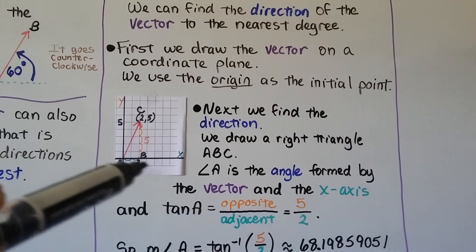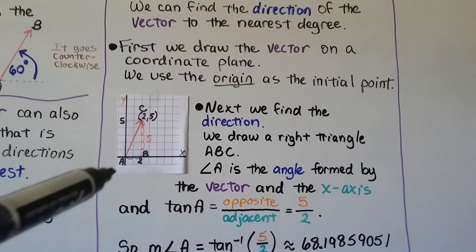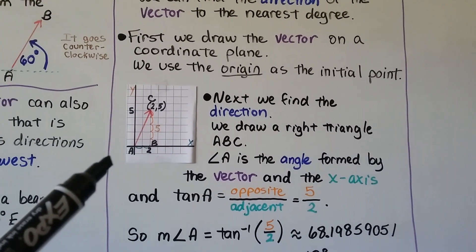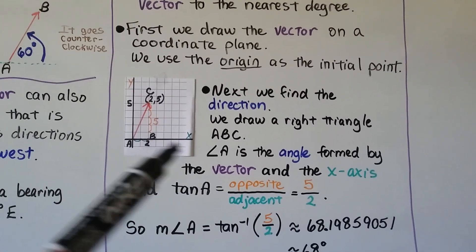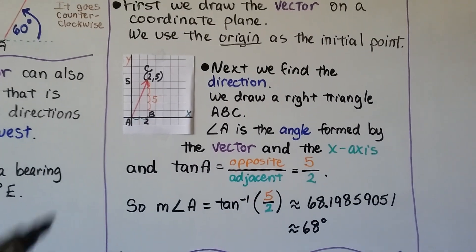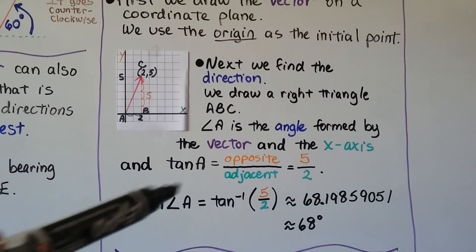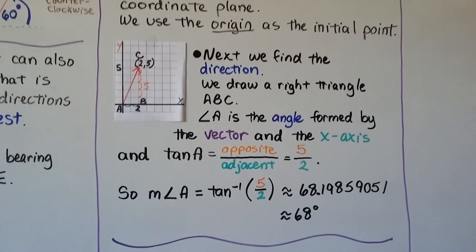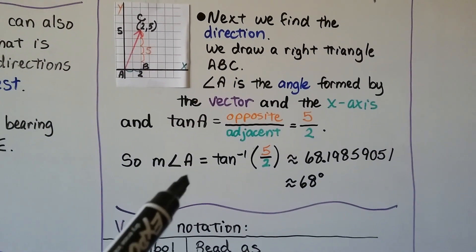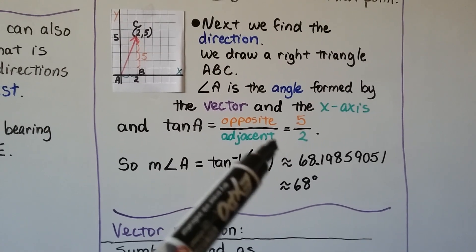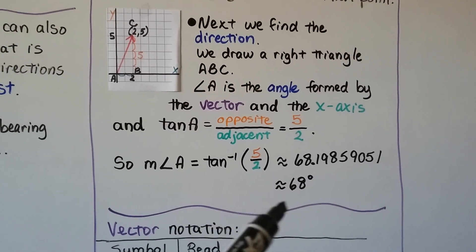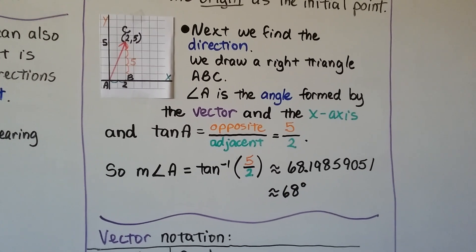And now, next, we find the direction. And we draw a right triangle. So we have ABC. Angle A is the angle formed by the vector and the x-axis. And tangent of A is equal to the opposite over the adjacent, so that's going to be 5 over 2. And the measure of angle A is equal to the inverse tangent of 5 over 2. On our calculator, we get this nice long decimal number, which rounds to approximately 68 degrees.